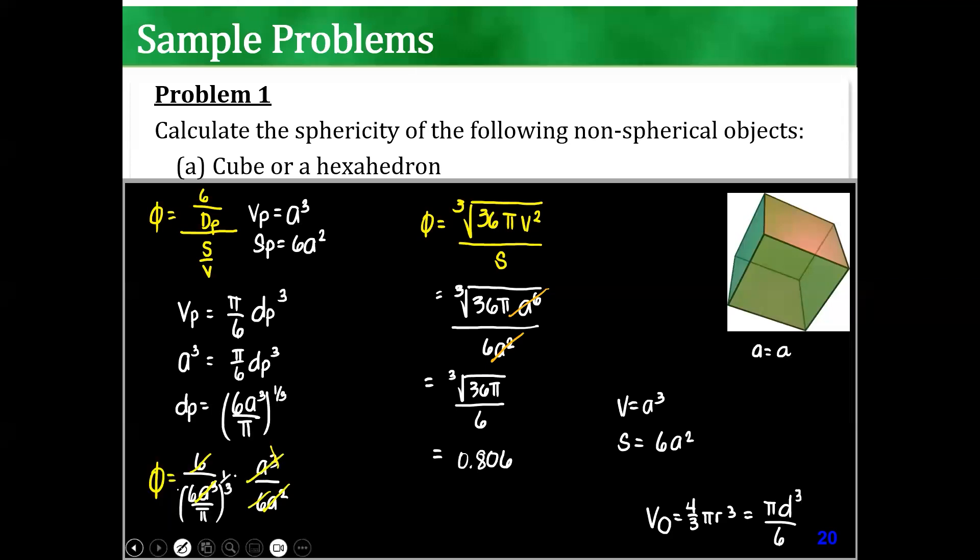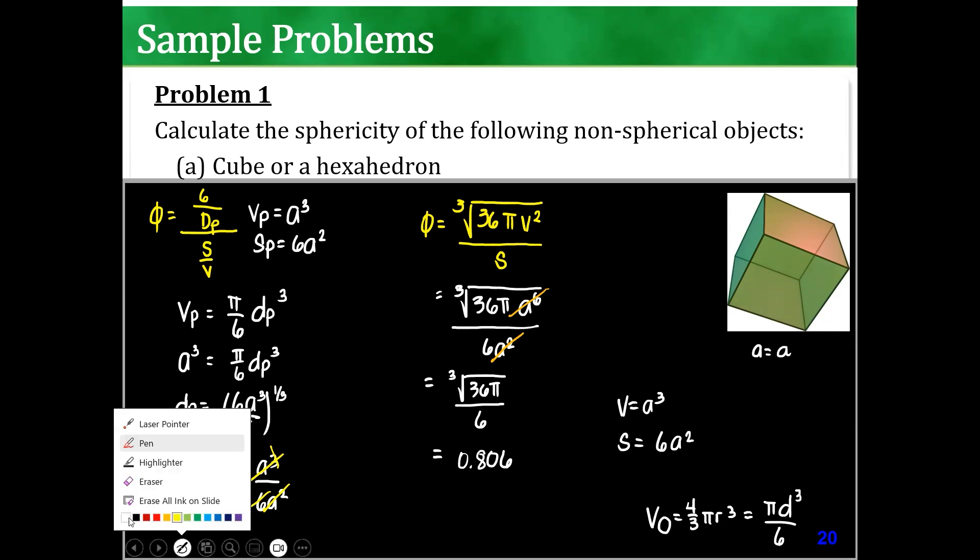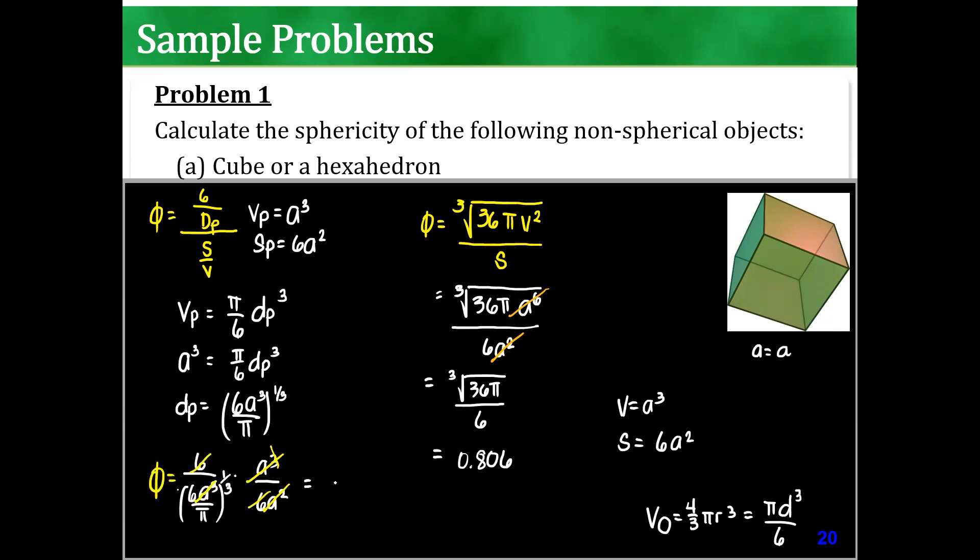This whole thing cancels out with that. What's left is at the bottom, pi, 6 over pi, with 1 third. So, can you please try calculating this? What's 6 over... What's pi over 6 raised to 1 third? It's the same.